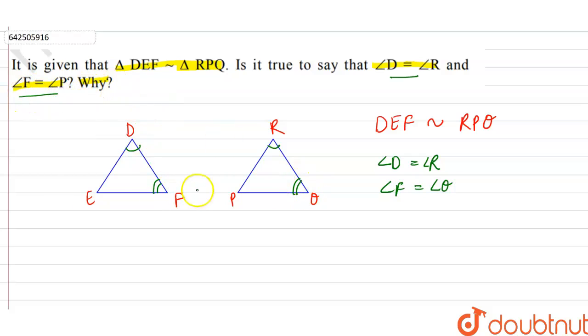F equals angle P. So this statement is false. Actually, angle E will be equal to angle P. Therefore we can say that the statement given above is false, as angle F equals angle Q and angle P equals angle E.